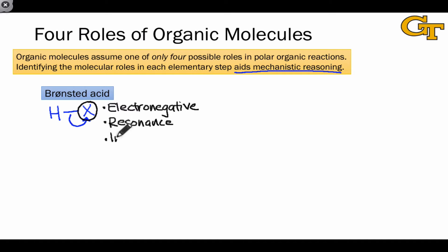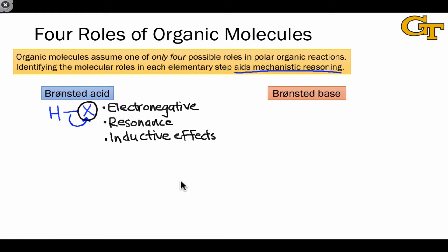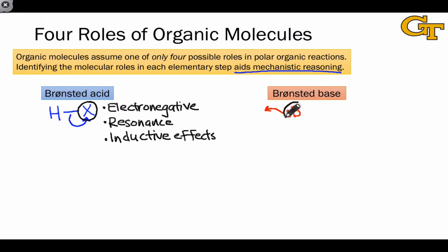Inductive effects — groups within X that withdraw electrons through their sigma bonds — are another thing to look for. In any reaction that includes a Bronsted acid, we should also be looking in another molecule for a Bronsted base. A Bronsted base is simply a molecule that donates a pair of electrons toward a proton in a Bronsted acid, often using a lone pair, though not always. Since a Bronsted base is giving away electrons, we're looking for structural features in base B that are opposite to those of the Bronsted acid.